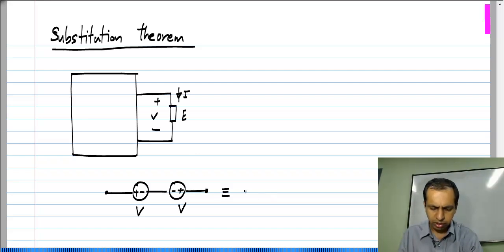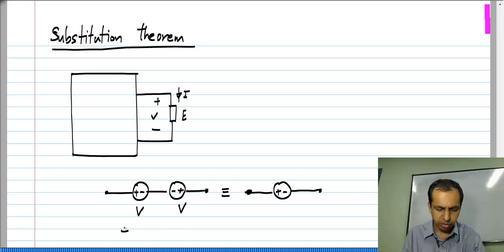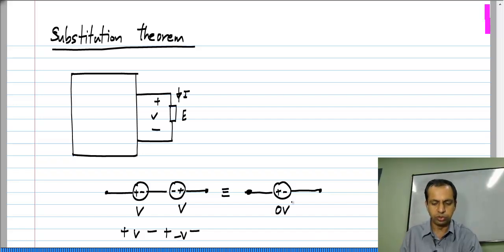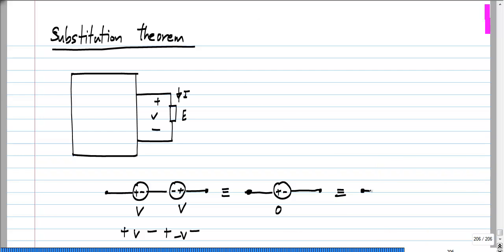This is equivalent to a single voltage source whose value is the sum of the individual values. With the polarity, I have V and in the same polarity I have minus V because of this source. So the whole thing is equivalent to a zero-volt voltage source, and a zero-volt voltage source is nothing but a short circuit or a wire.